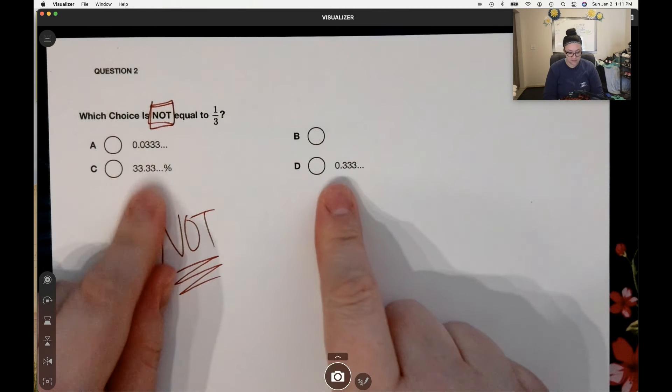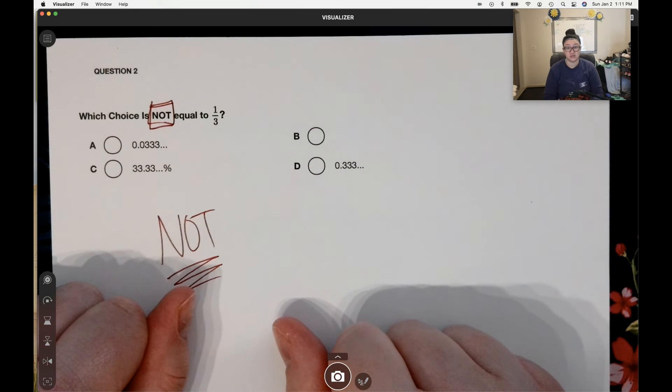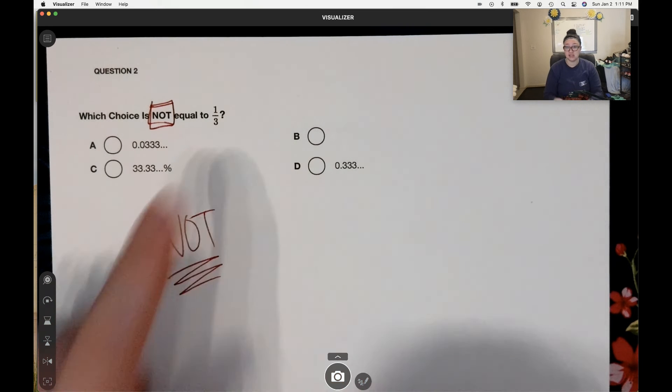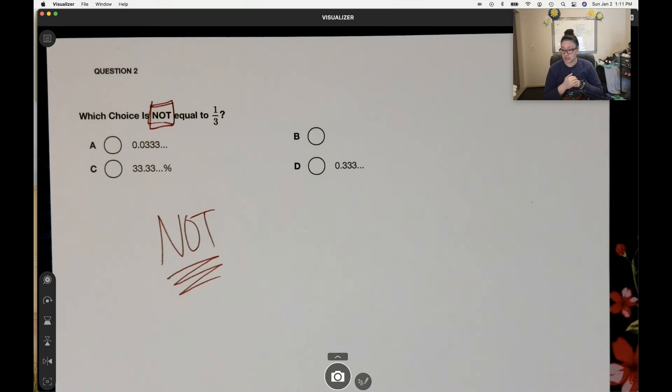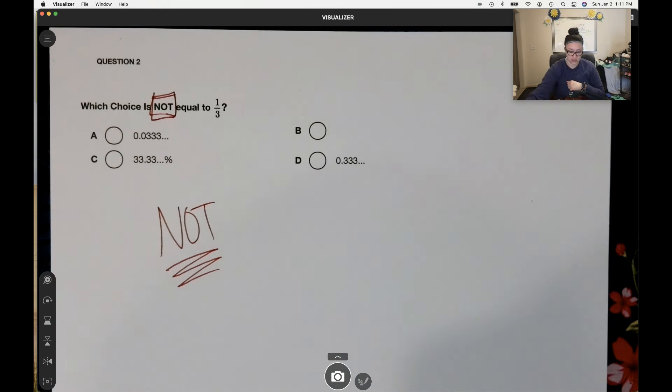So we have fractions, decimals, and percents. Whenever we're comparing things to fractions, we want to turn it into a decimal point. How do we turn a fraction into a decimal? Again, we've got to divide.